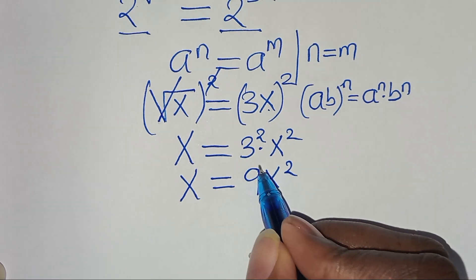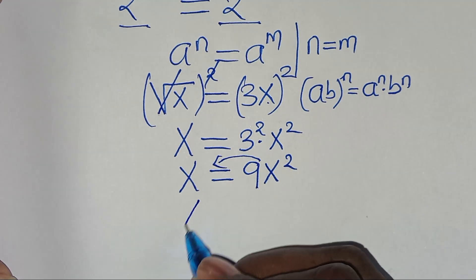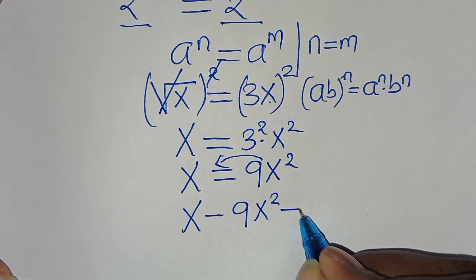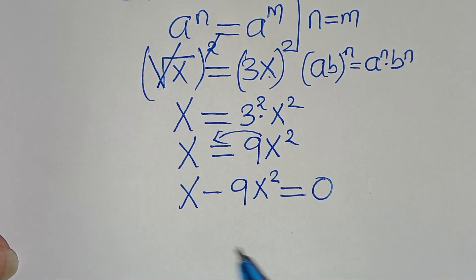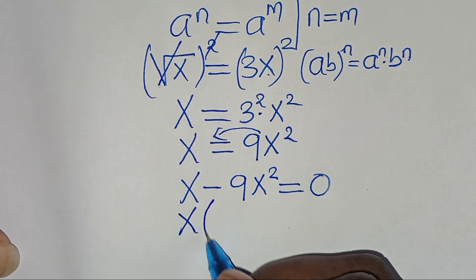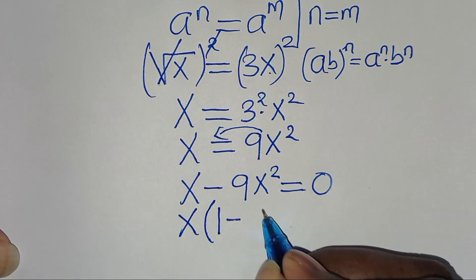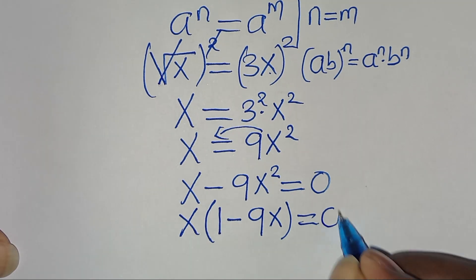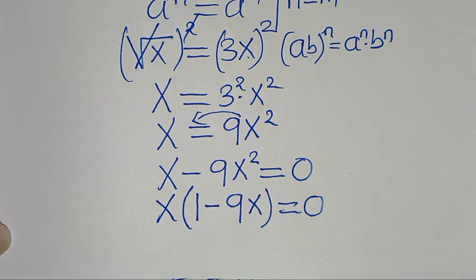Let's take 9x squared to the left hand side, so that now we have x minus 9x squared equals 0. Note that x is common, so we can factor out x, giving us x times (1 minus 9x) equals 0.